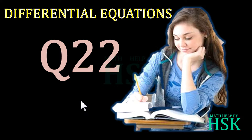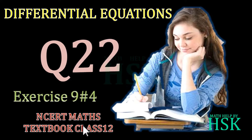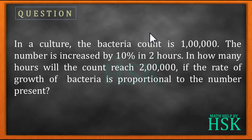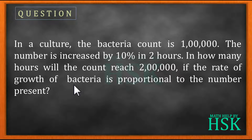Hello friends. In this video I'm going to take question number 22 of Exercise 9.4 from the NCERT Maths textbook, Class 12, from the chapter on differential equations. The question is: in a culture, the bacteria count is 100,000. The number is increased by 10% in two hours. In how many hours will the count reach 200,000, if the rate of growth of bacteria is proportional to the number present?